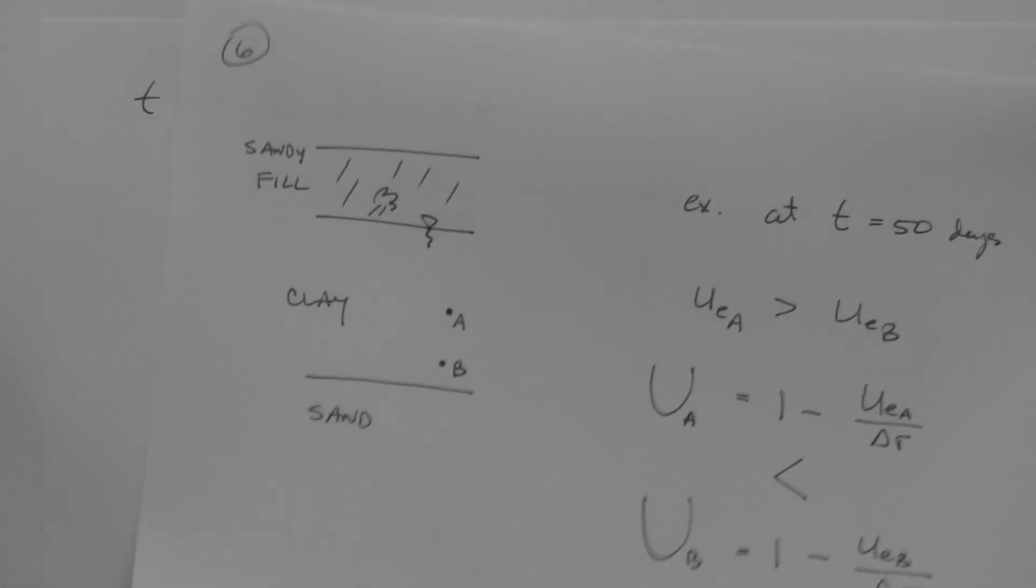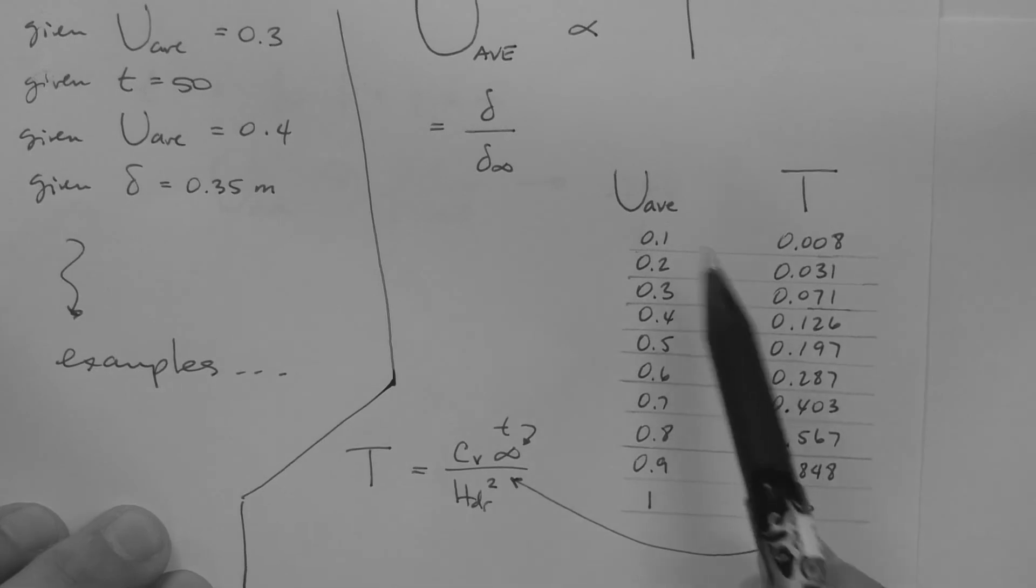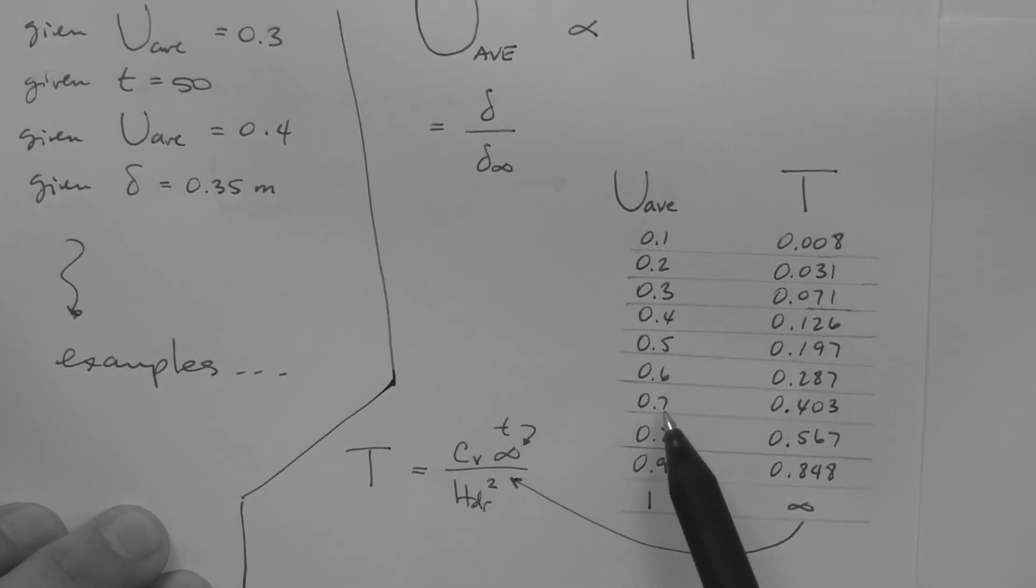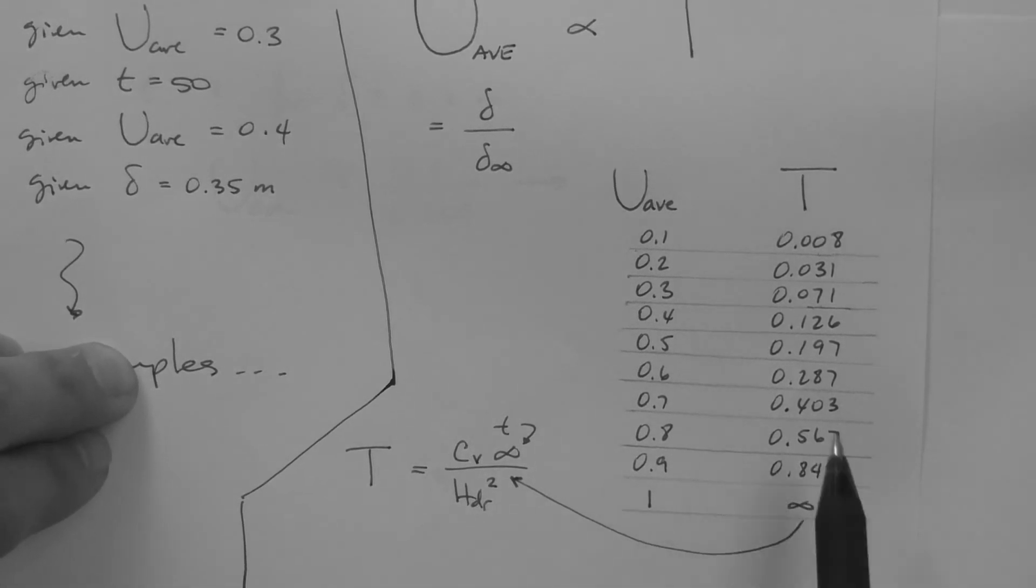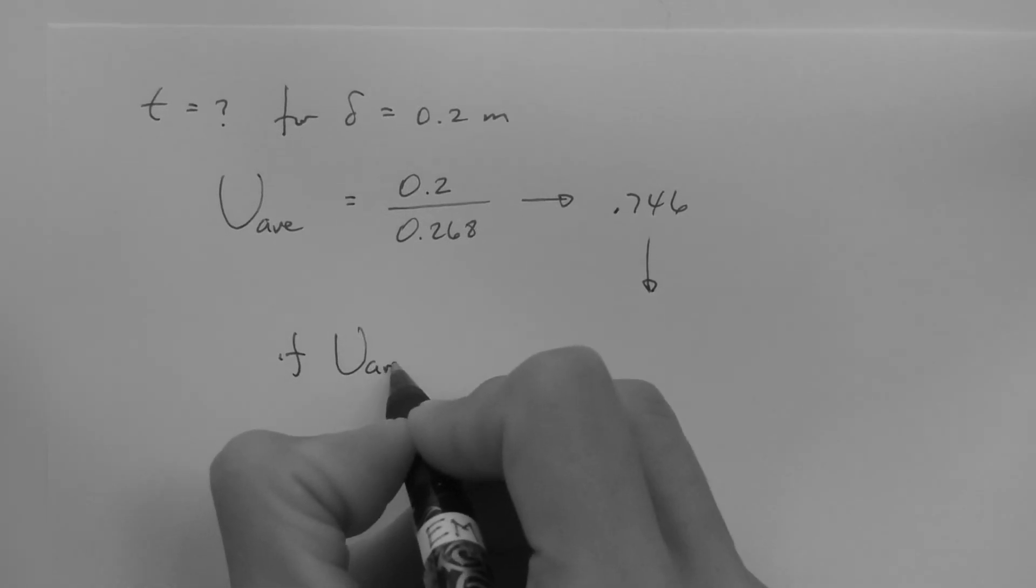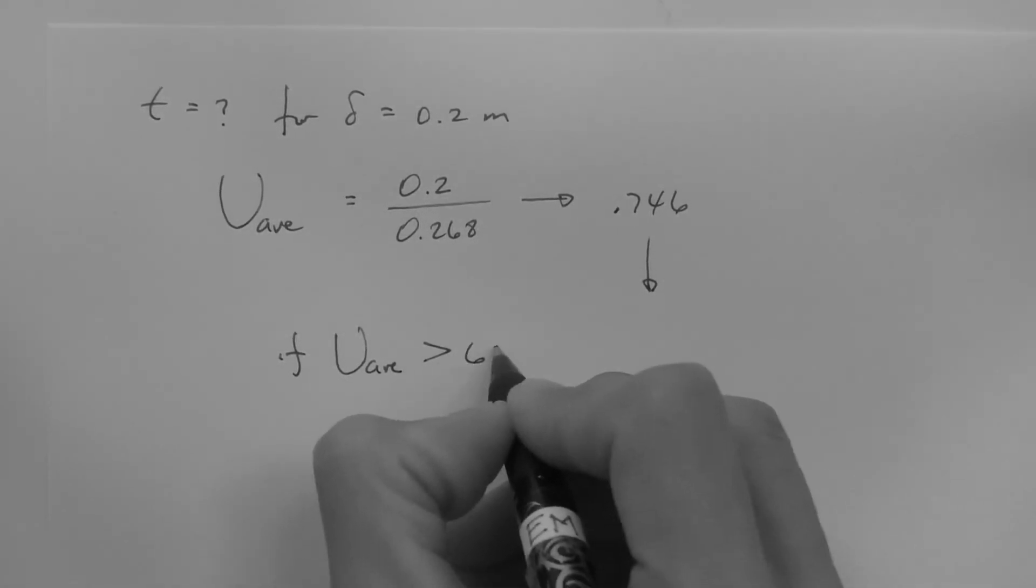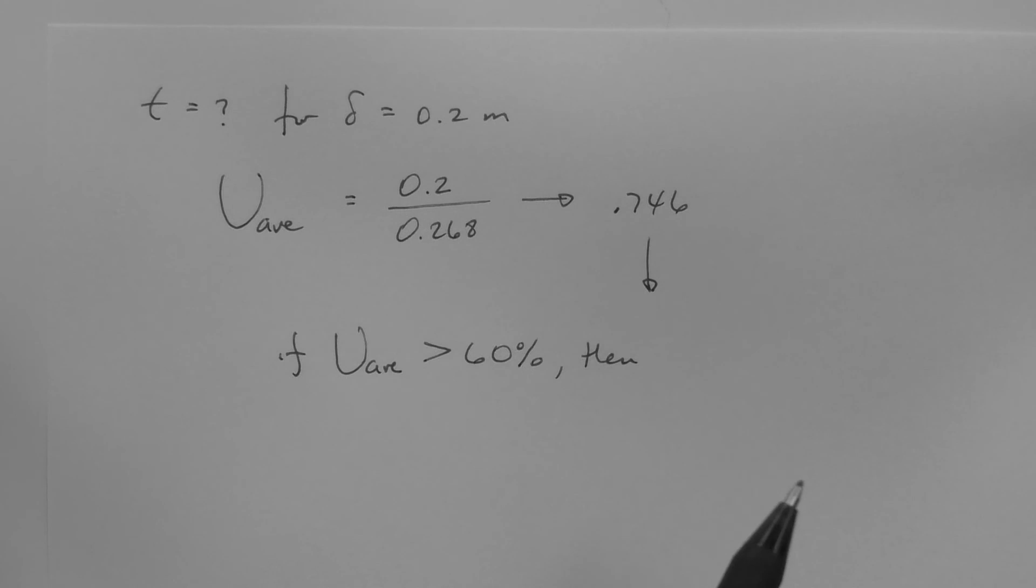Now, if we go to the table, we find that we don't have a value of the average degree of consolidation of 0.746. We can extrapolate, obviously. So the value of the time factor would be between 0.403 and 0.567.